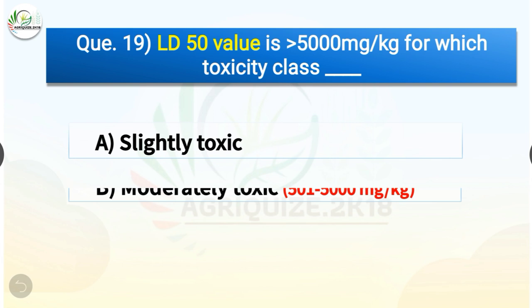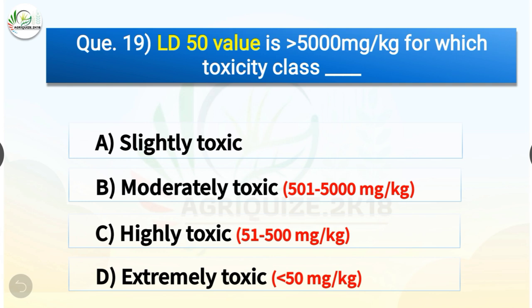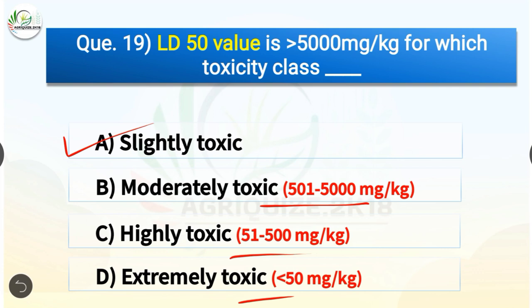Question number nineteen: LD50 value greater than 5000 mg/kg corresponds to which toxicity class? Options are slightly toxic, moderately toxic, highly toxic, or extremely toxic. The correct answer is option A, slightly toxic. For moderately toxic: 501–5000 mg/kg; for highly toxic: 51–500 mg/kg; for extremely toxic: less than 50 mg/kg.